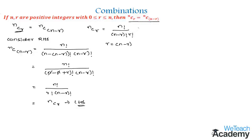Hence, make a note of this theorem: nCr = nC(n−r), as it is important for solving examples in our next videos. Also make a note of the values nCn = nC0 = 1. Now let us prove that the value of nCn is equal to 1.